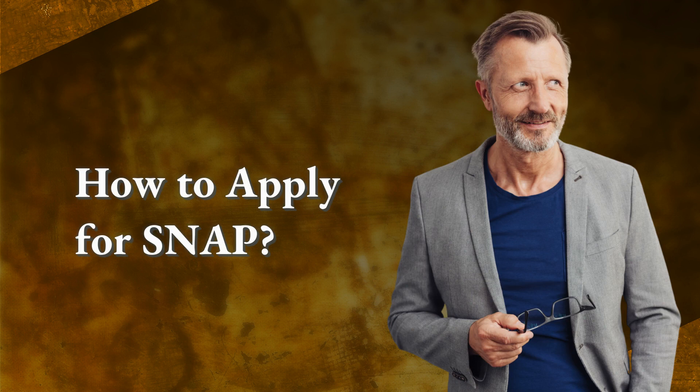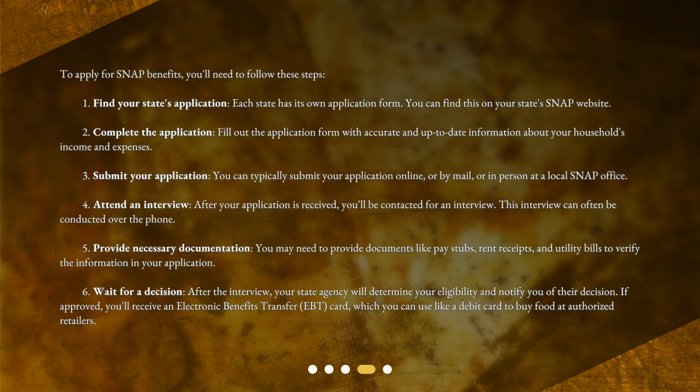How to apply for SNAP? To apply for SNAP benefits, you'll need to follow these steps. Step 1: Find your state's application. Each state has its own application form, which you can find on your state's SNAP website. Step 2: Complete the application. Fill out the application form with accurate and up-to-date information about your household's income and expenses. Step 3: Submit your application. You can typically submit your application online, by mail, or in person at a local SNAP office.